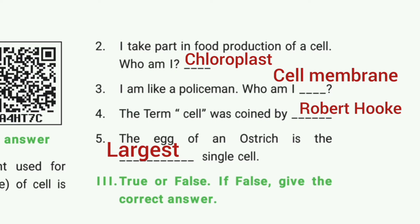Third one: I am like a policeman — who am I? The answer is cell membrane. Fourth one: the term 'cell' was coined by dash. The answer is Robert Hooke. Fifth one: the ostrich egg is the dash single cell. The answer is largest single cell.